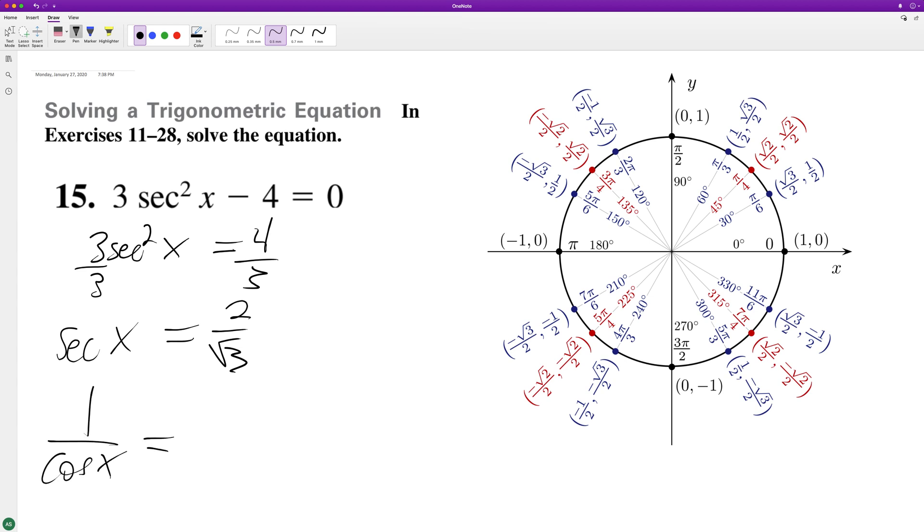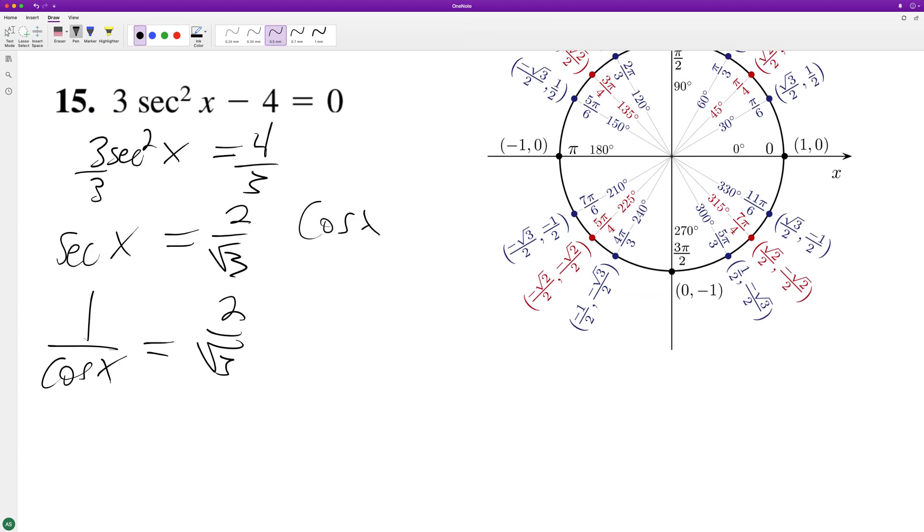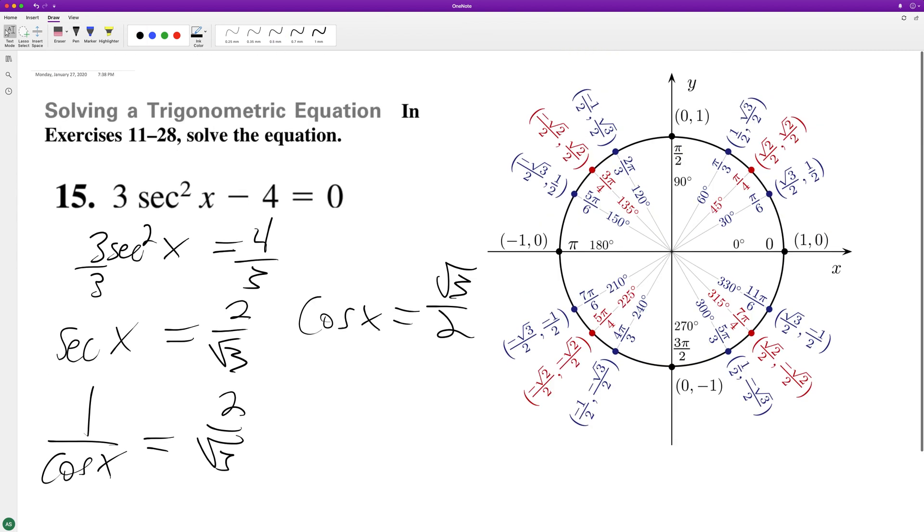So if we reciprocate the entire thing, we end up with cosine X equals root 3 over 2. Or you could have just looked at it where cosine equals root 3 over 2.